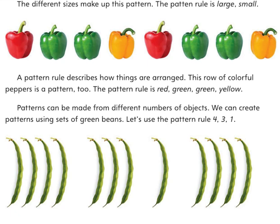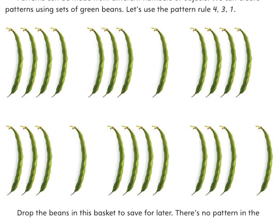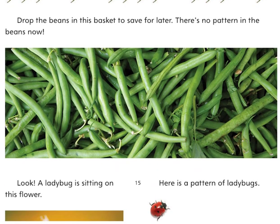Patterns can be made from different numbers of objects. We can create patterns using sets of green beans. Let's use the pattern rule 4, 3, 1. Drop the beans in this basket to save for later — there's no pattern in the beans now.